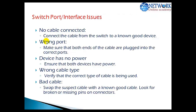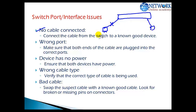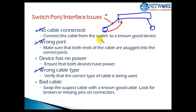Let's look at possible physical connectivity issues when there is no communication between two devices in the LAN. The first and simplest issue is no connection — make sure the cable between the two devices is connected correctly. If there is no cable connected, you will not have any communication. You might also be connecting on a wrong port, so make sure you're connecting on the proper port. Also check the cable type — you might be using a crossover cable where you need a straight-through cable to connect a PC to a switch.